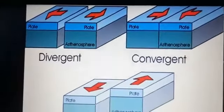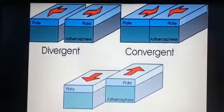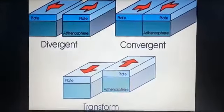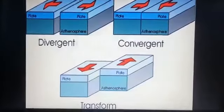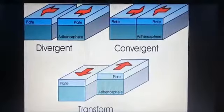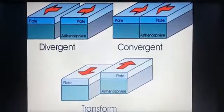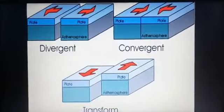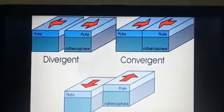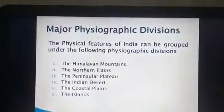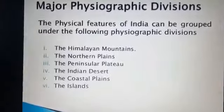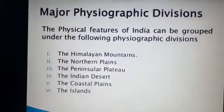Now we will discuss about how the Himalayas were formed. It is believed that millions of years ago, India was a part of a big continent known as Gondwana Land. The peninsular part of Gondwana Land was the oldest landmass. Gondwana Land included India, Australia, South Africa, South America and Antarctica as one single landmass.